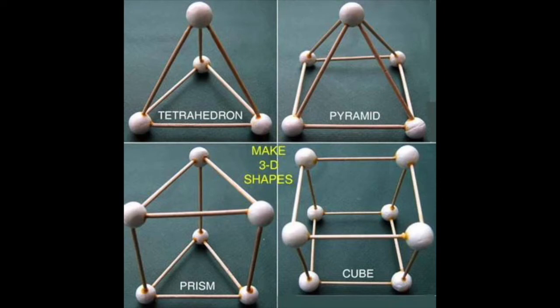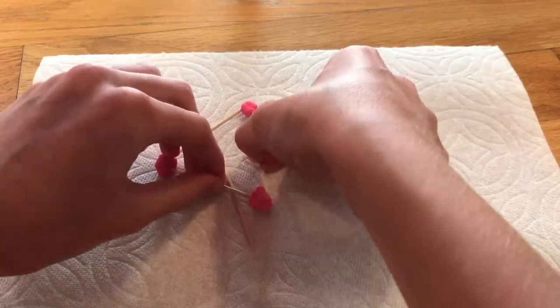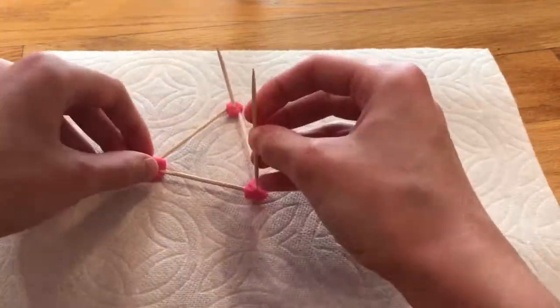Break apart your first structure and create some of your own. If you're stuck, some basic shapes to start off with are tetrahedrons, prisms, pyramids, and cubes. A tetrahedron, also known as a triangular pyramid, has four triangular faces.